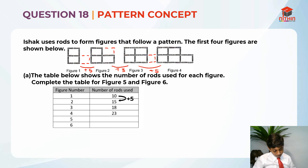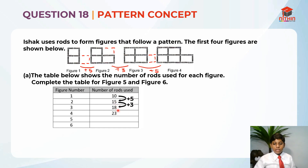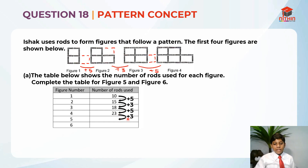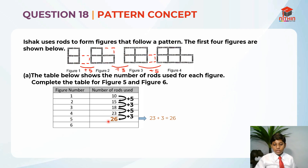It's always a plus 5, plus 3, just like here. So figure 1 to figure 2 is plus 5. So 10 plus 5 is 15. Then after that, 15 plus 3 is 18. And then 18 plus 5 is 23. After 5 comes 3, so it is 23 plus 3. So in order to find figure 5, we take 23 plus 3 equals to 26. So 26 is the answer for figure 5.